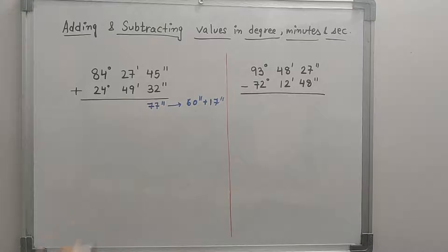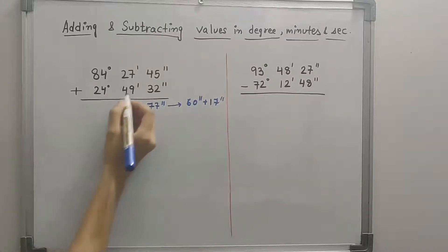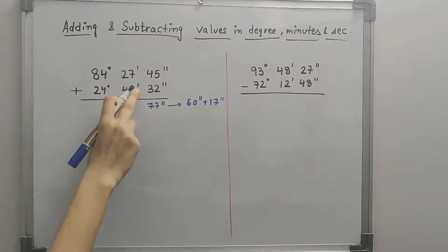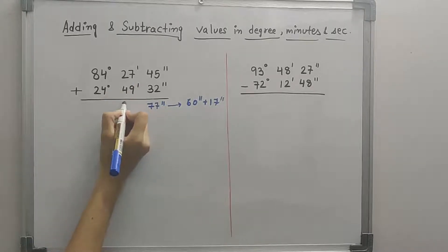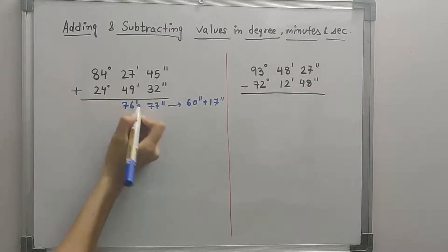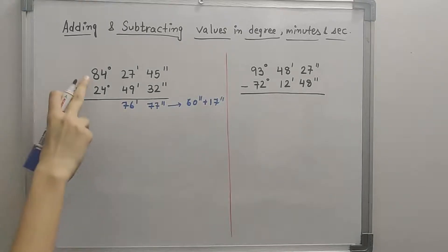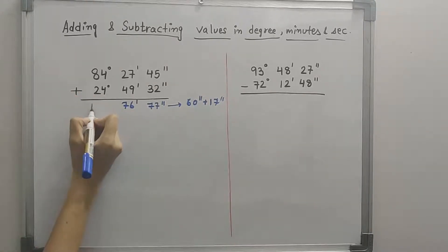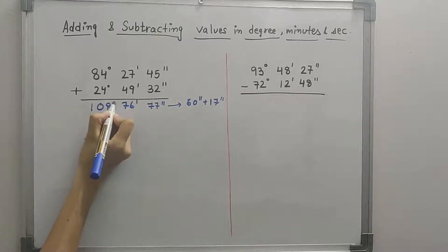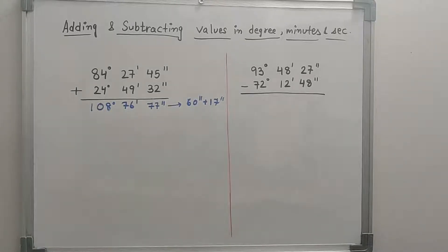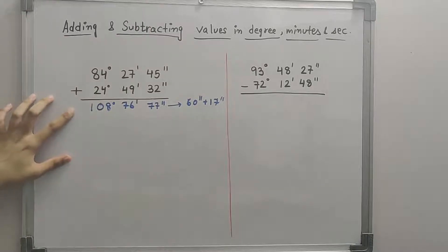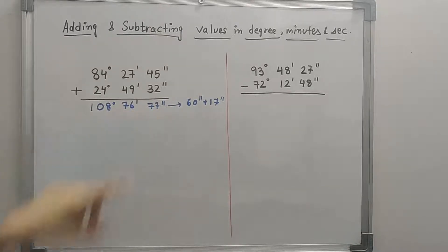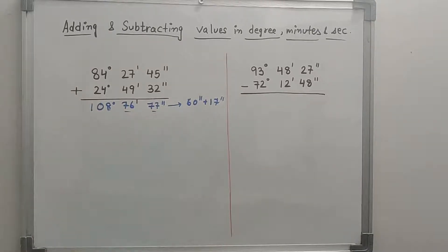First we would go ahead and add them all. By adding 27 minutes to 49 minutes we get 76 minutes, and by adding 84 degrees to 24 degrees we end up with 108 degrees. So right now we have 108 degrees, 76 minutes, and 77 seconds. Since our values for minutes and seconds are greater than 60, we do have to change them.